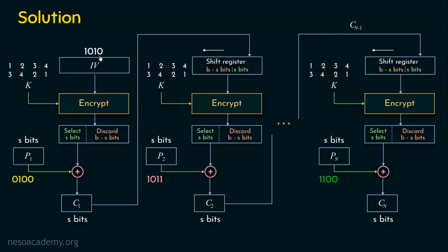Now let's generate the ciphertext. The initialization vector 1010 is given to the encrypt function, which is a permutation cipher, so the positions of the bits are going to be changed. When 1010 enters the encryption algorithm, it refers to the key. The key specifies output positions as 3, 4, 2, 1 — meaning whatever is in the third place comes first, the fourth place comes second, the second place comes third, and the first place comes fourth. The third bit of 1010 is 1, the fourth bit is 0, the second bit is 0, and the first bit is 1. So after the encryption function, we get 1001.